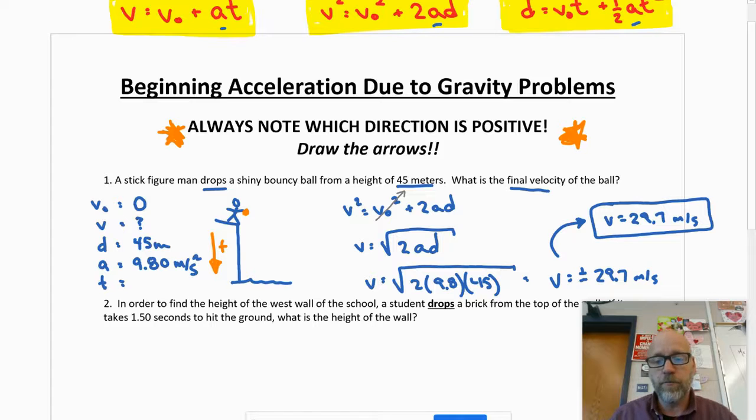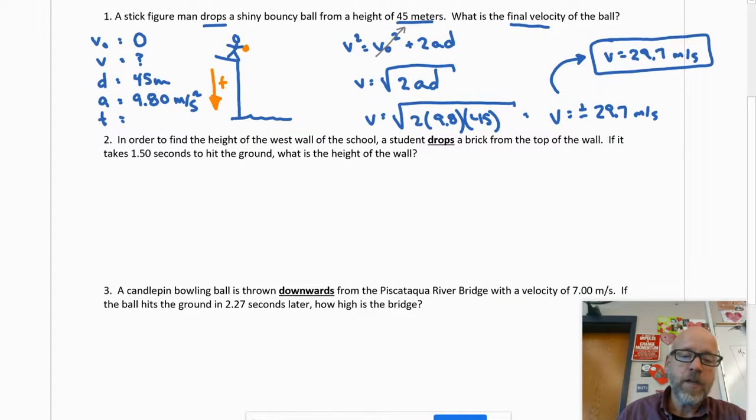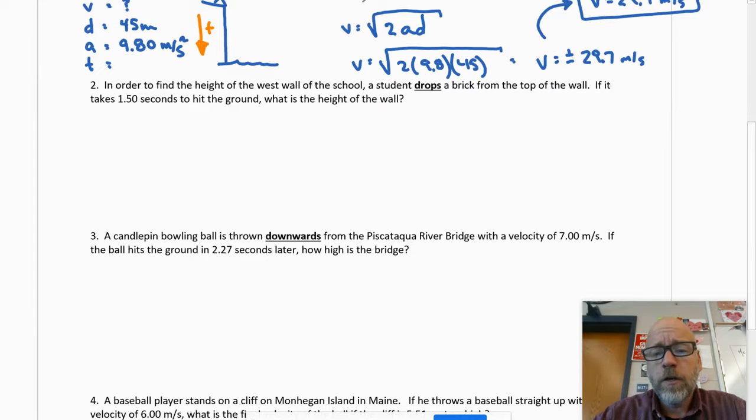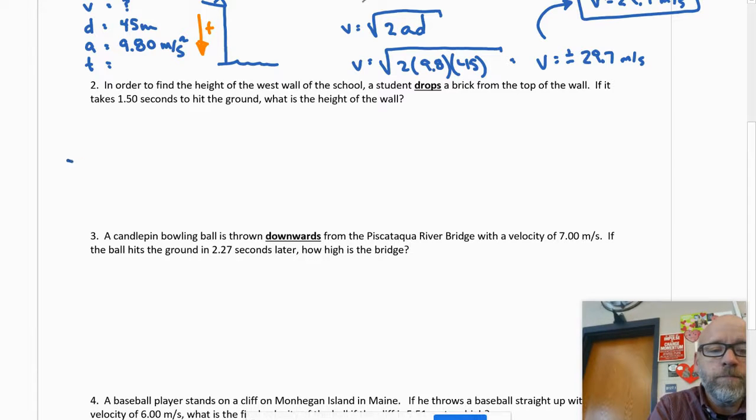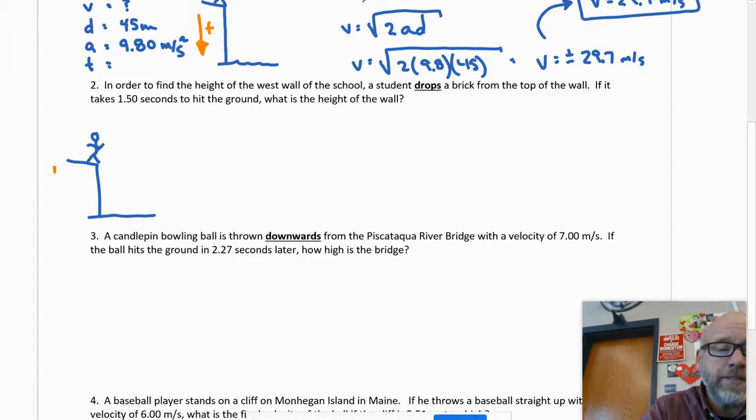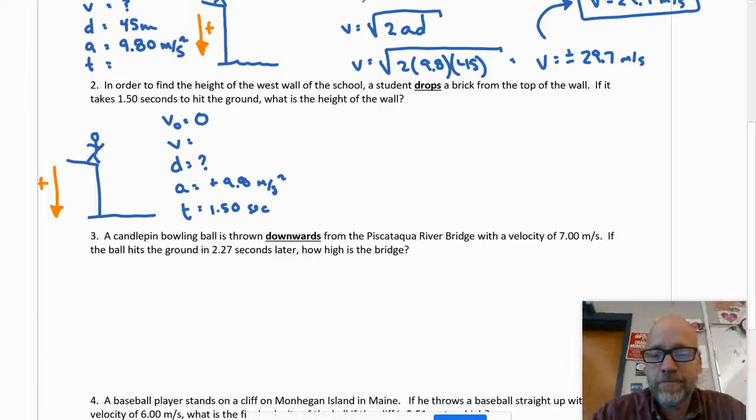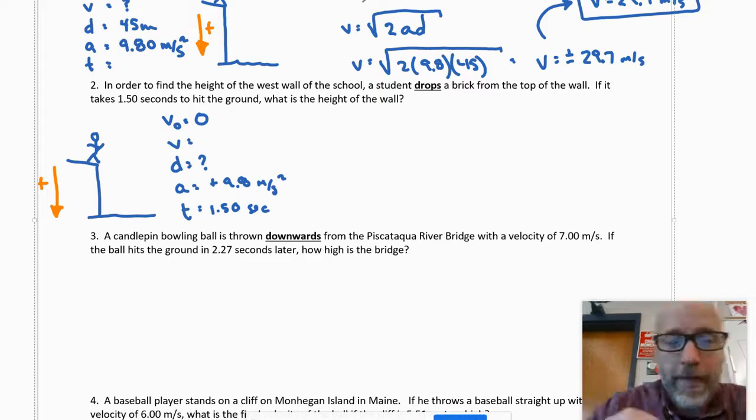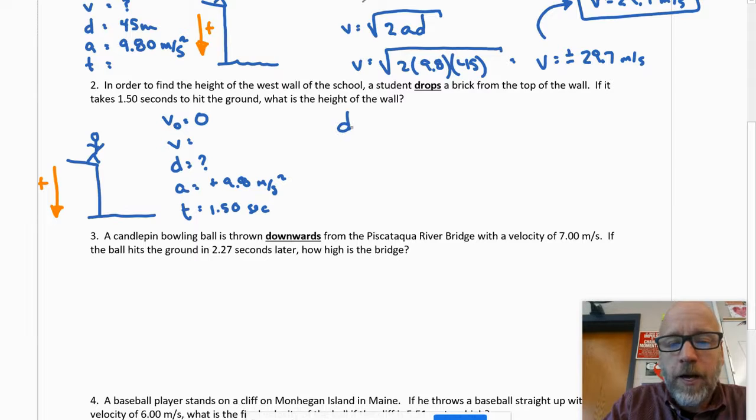Now if you put your pencils down for a second, here's the thing: if I had made up positive, then my displacement here would have been negative, my acceleration would have been negative, and see how the signs would have crossed out right there. I still would have ended up with the same answer, but if I had made up positive then I would have chosen the negative root. Next, in order to find the height of the west wall of the school, a student drops a brick from the top of the wall.